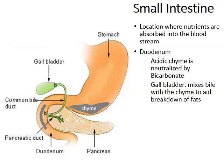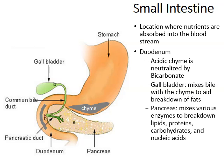There's a pear-shaped green object in the picture called the gallbladder, which releases bile. The gallbladder releases bile that mixes with the chyme to help break down fats and lipids in the food we've eaten. There's also the pancreas, which releases a variety of enzymes to break down lipids, proteins, carbohydrates, and nucleic acids in the foods we've eaten.